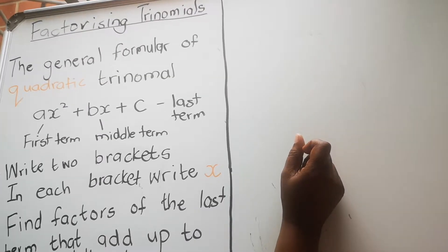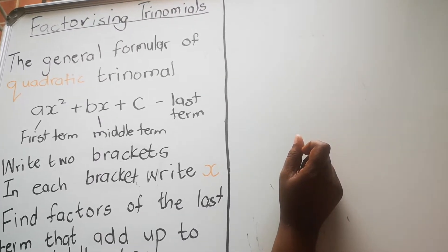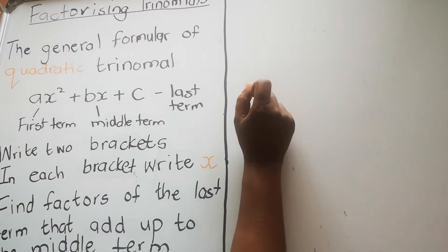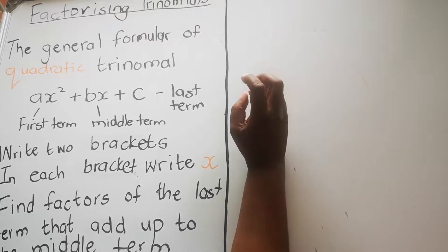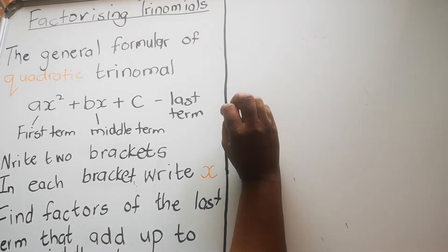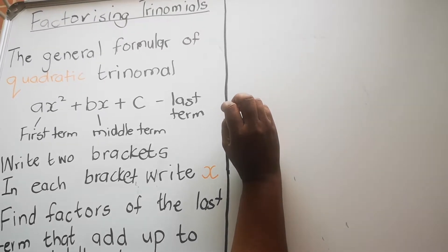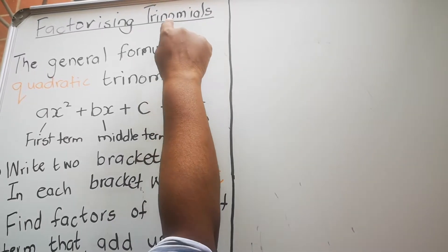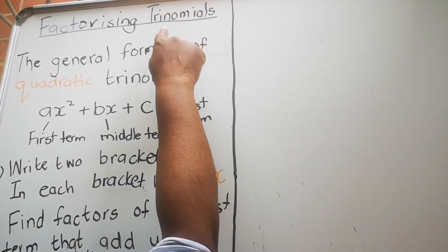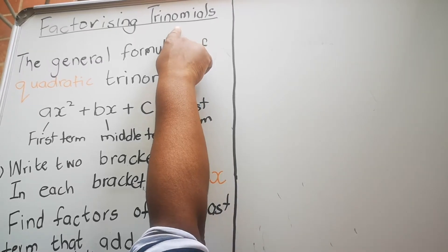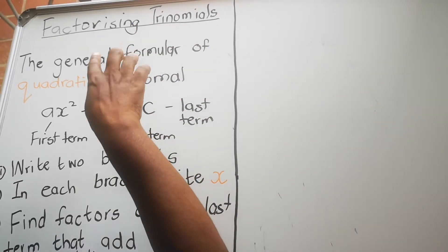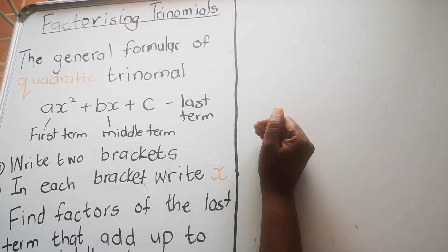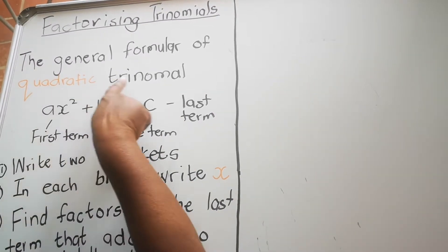Hello everyone. In this lesson we're going to look at factorizing trinomials. When you factorize, you write things that you multiply to get that number. If you are factorizing more than one term, this is a trinomial. You can have a monomial — one term — a binomial — two terms — and a trinomial — three terms. We're going to look at factorizing a special kind of trinomial: a quadratic trinomial.